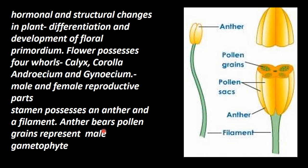The anther bears pollen grains. Pollen grains are present within the pollen sac of the anther. These pollen grains themselves are not male gametes — they represent the male gametophyte. How pollen grains develop will be covered in the next discussion.